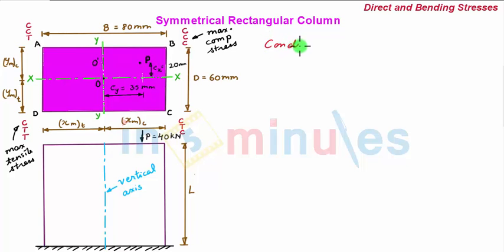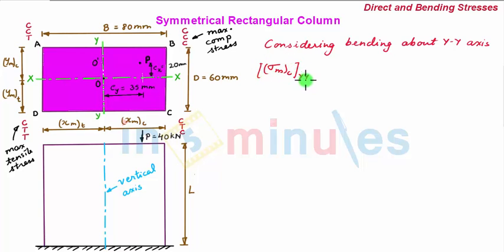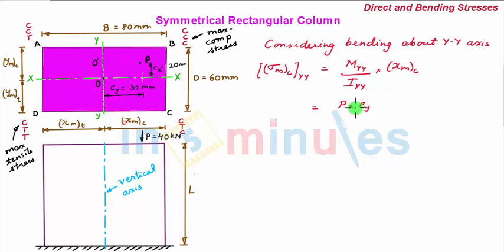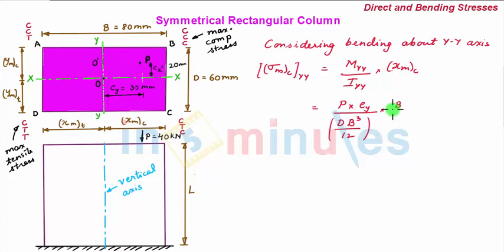Now considering bending about the YY axis, we have sigma max of compression about the YY axis equal to M_YY divided by I_YY multiplied by X_max of compression. Now M_YY is P multiplied by e_Y, and I_YY is dB³ divided by 12 — the moment of inertia of the cross-section about the centroidal YY axis — and X_max is half of the width, so B divided by 2.